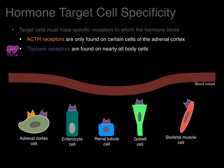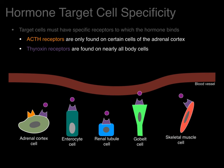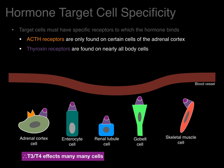Now T3 and T4: secreted from the thyroid gland, they enter the bloodstream and travel throughout the body and diffuse into tissues. All of those cells have receptors, therefore all of those cells will have some type of effect. T3 and T4 affect many, many cells because thyroxine receptors are found on pretty much all body cells.